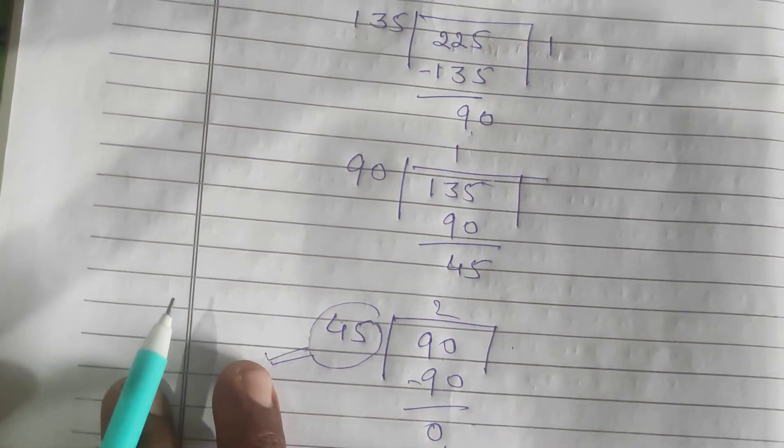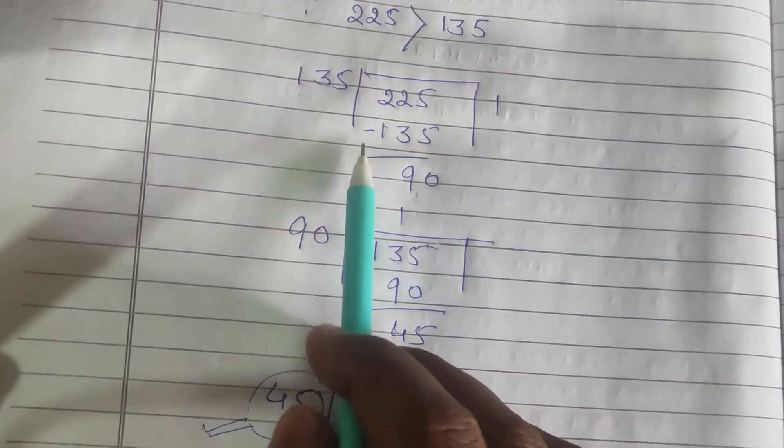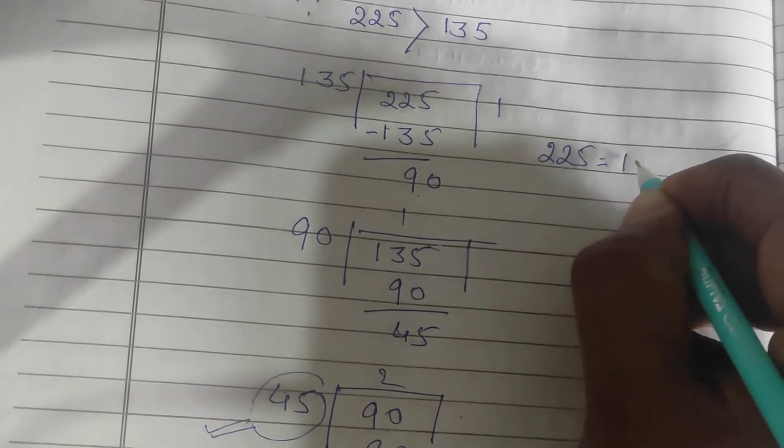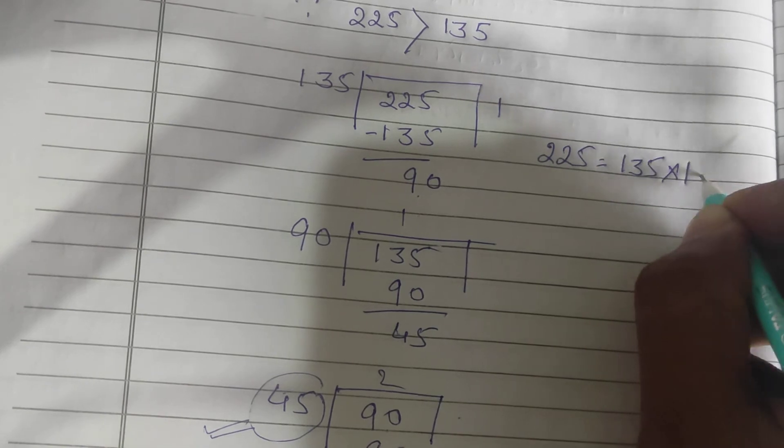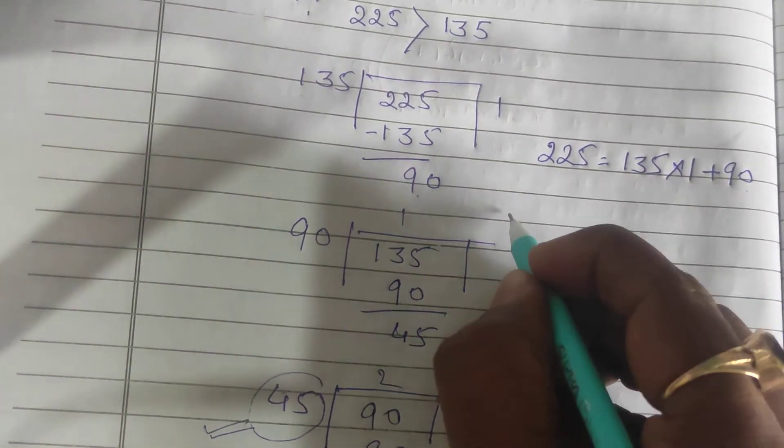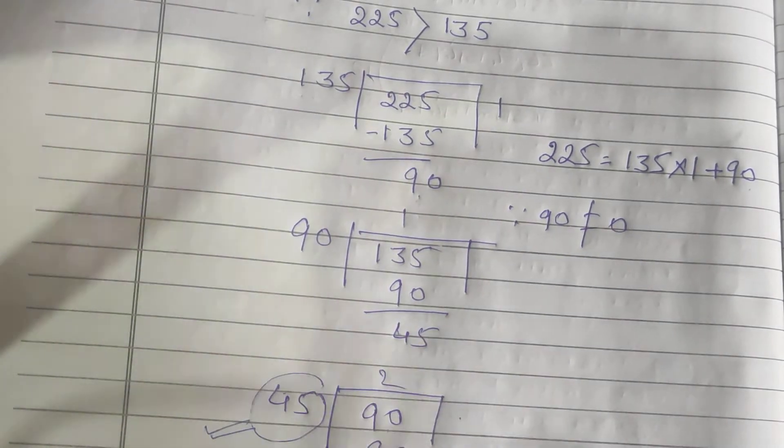Now if we express in terms of Euclid's division lemma: We divided 225 by 135. Quotient is 1 and remainder is 90. So 225 = 135 × 1 + 90. The remainder 90 does not equal 0, so we proceed further.